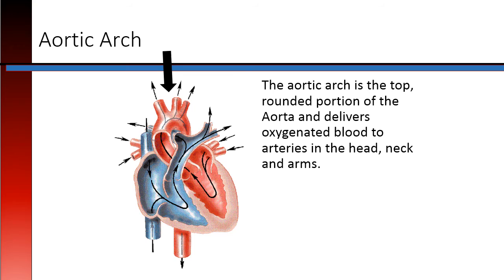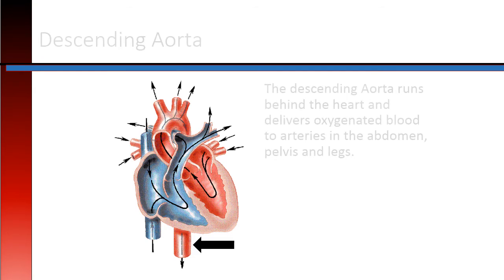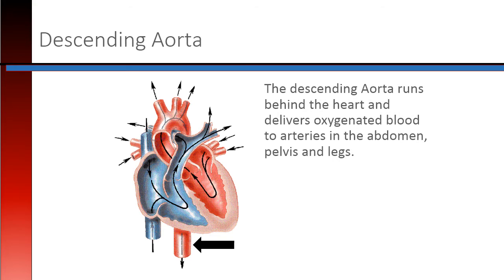The aortic arch is the top rounded portion of the aorta and delivers oxygenated blood to arteries in the head, neck, and arms. The descending aorta runs behind the heart and delivers oxygenated blood to arteries in the abdomen, pelvis, and legs.